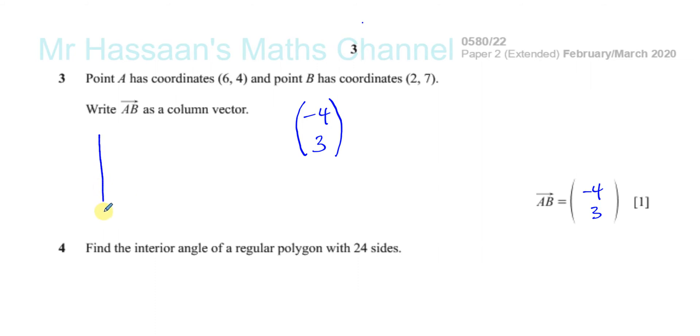If you were to think about it in a sketch, you don't have to do this, it's just to show you. Say that's 6, 4. That's A. And B is 2, 7, so 2 and 7 up here somewhere. And this is the vector from A to B. You've got to go across 4 spaces to the left and 3 spaces up. Minus 4, 3 to get from A to B that way.